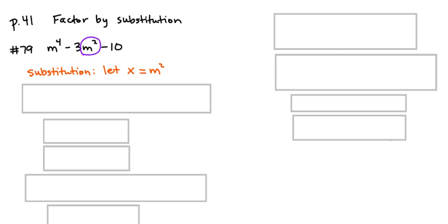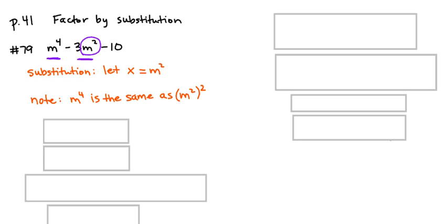So somehow we're going to replace this first expression with something involving x and this second one with something involving x. Working on the first one, keep in mind that m to the fourth is equivalent to m squared squared. That's just exponent properties. So if x is m squared, then m squared squared is the same as x squared.